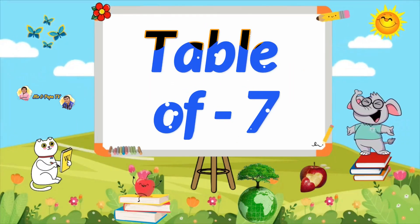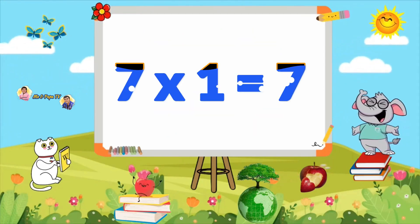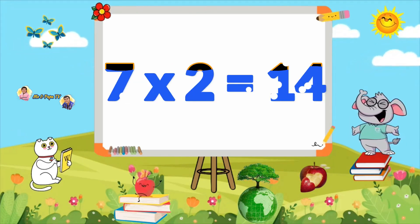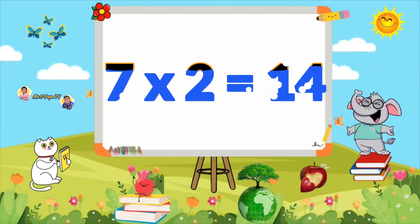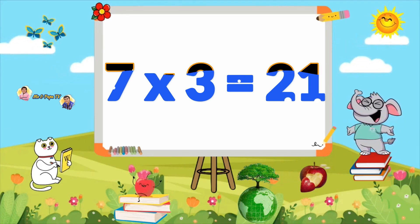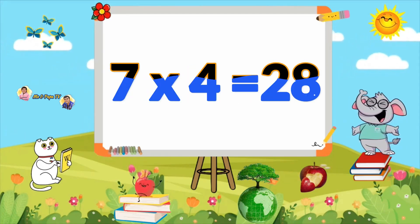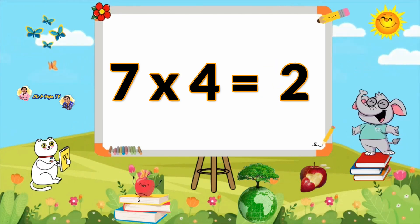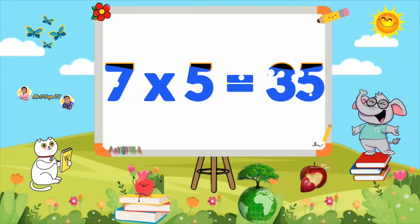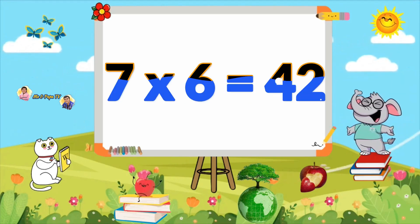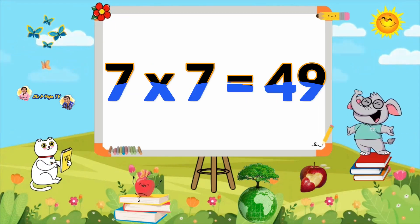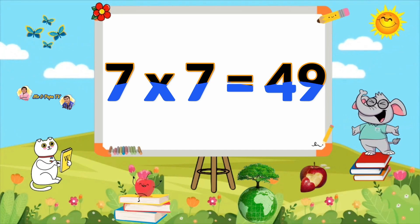Learn Table of 7. 7×1=7, 7×2=14, 7×3=21, 7×4=28, 7×5=35, 7×6=42, 7×7=49.